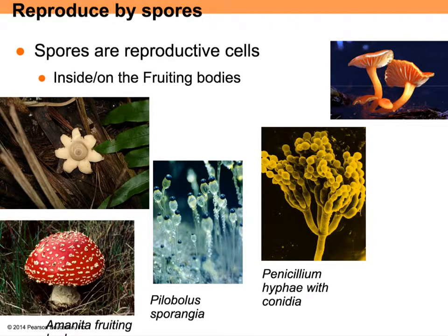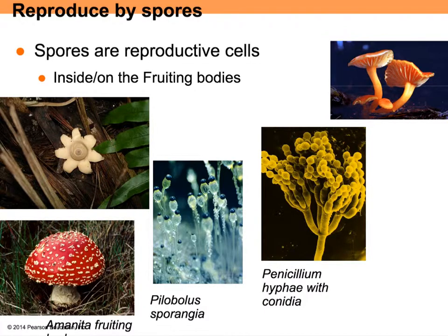All fungi reproduce using spores — asexual spores making clones, and sexual reproductive spores. Reproductive structures like mushrooms, puffballs, or your typical mushroom have gills underneath where the actual spores are produced. With asexual reproduction, these fruiting bodies can be smaller, sometimes even microscopic, and each dot is a spore being produced. So remember, when you put mushrooms on your pizza, you're actually eating the reproductive structure of a fungus.